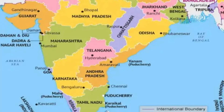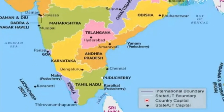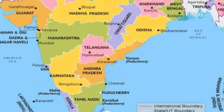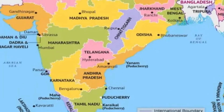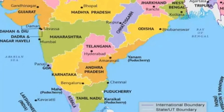In the south, Tamil Nadu was once called Madras. A very important state on the left of Tamil Nadu is Kerala. Looking at the southern layout: Maharashtra on the left, Chhattisgarh below Madhya Pradesh, and further right of Chhattisgarh is Odisha.